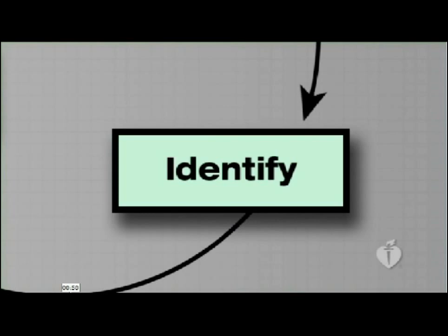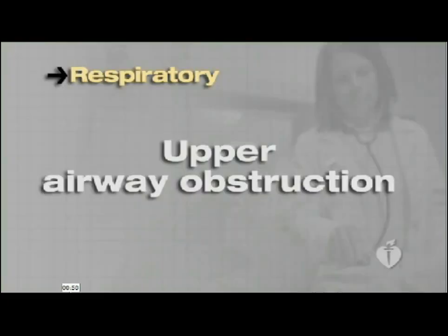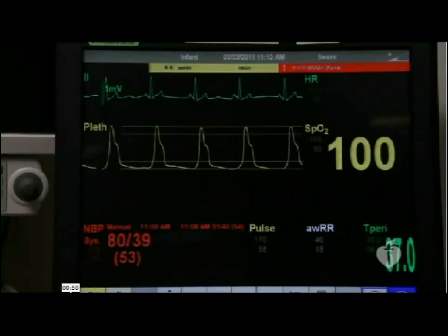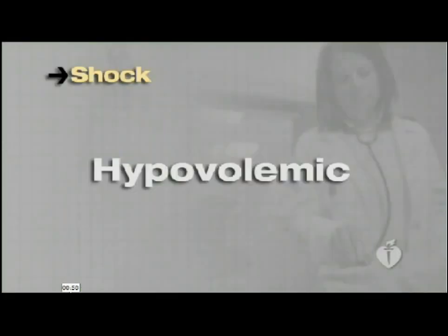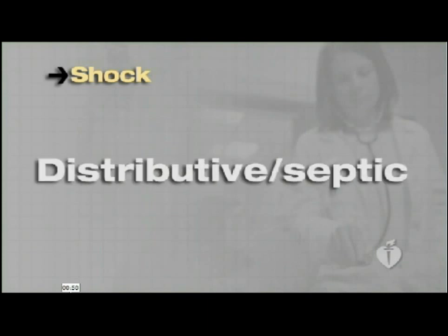The next step of the evaluate, identify, intervene sequence is identify. You need to identify any illness as either respiratory, circulatory, or a combination of both, and identify the severity. Respiratory problems can be categorized into four groups: upper airway obstruction, lower airway obstruction, lung tissue disease, and disordered control of breathing. The severity may be respiratory distress or respiratory failure. Circulatory problems can be caused by arrhythmias or shock — the child should be placed on a cardiac monitor to look for arrhythmias such as bradycardia or tachycardia. Shock is further categorized into four groups: hypovolemic, obstructive, distributive/septic, and cardiogenic. The severity of shock may be compensated or hypotensive.